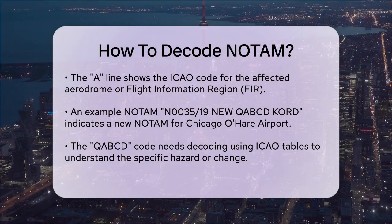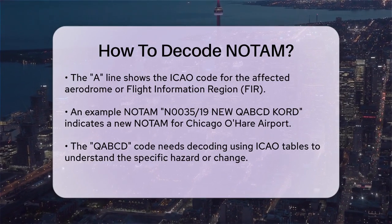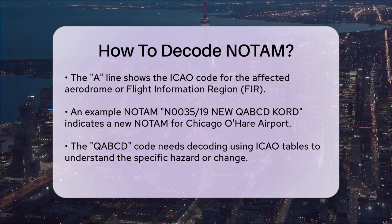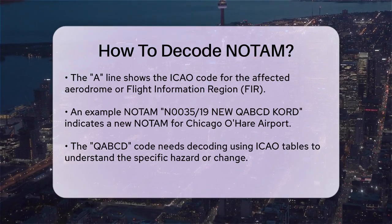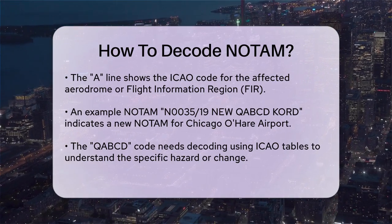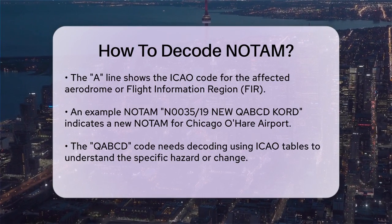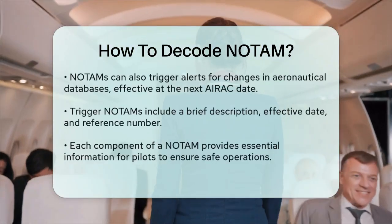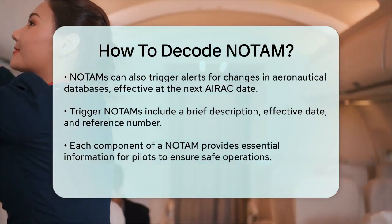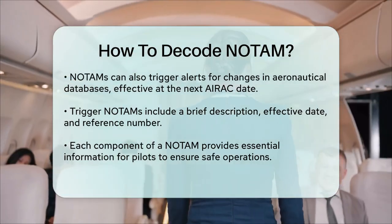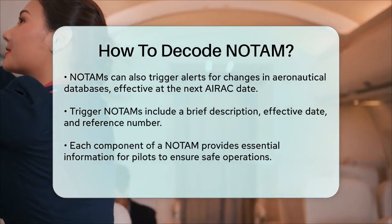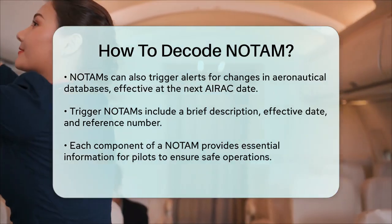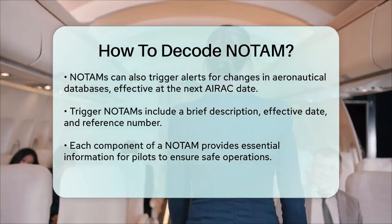Now let's decode an example. Suppose you have a NOTAM that reads N0035-19 New QABCD COORID. Here, N0035-19 tells you it's a new NOTAM in Series N, issued in 2019. The New indicates it's fresh information. The QABCD code needs to be decoded using ICAO tables — let's say AB stands for a runway closure, and CD indicates it's planned. Finally, COORID is the ICAO code for Chicago O'Hare Airport, telling you where the NOTAM applies. NOTAMs can also be triggered to alert those maintaining aeronautical databases of upcoming changes, usually effective at the next AIRAC date. These trigger NOTAMs contain a brief description, the effective date, and a reference number.